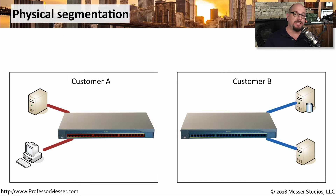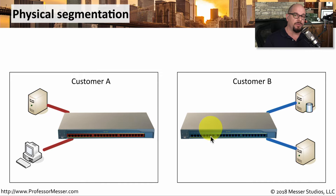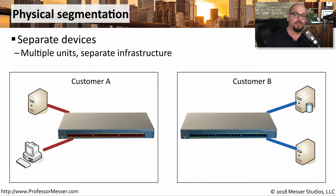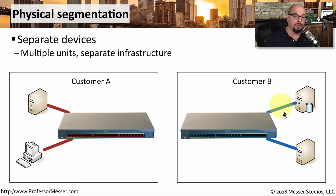Here's an example of physically separating the switches for customer A and customer B. Customer A's services are on their own physical switch, and customer B is on their own physical switch, with no connection between either of those different networks. This means for every single customer we have, we may have to put a completely separate physical switch in our rack and build out a separate infrastructure every time we bring in a new customer. You'll also notice that customer A has two devices but a 24-port switch, and customer B also has only two devices with another 24-port switch — so there's a lot of wasted real estate and unused interfaces.